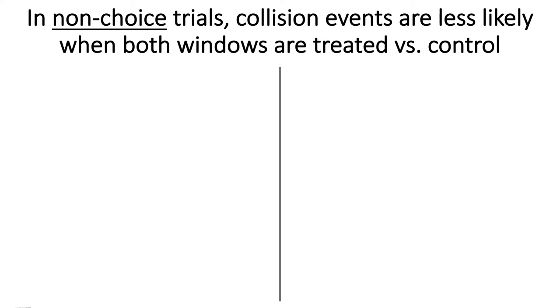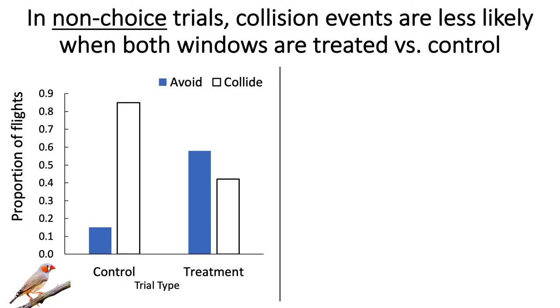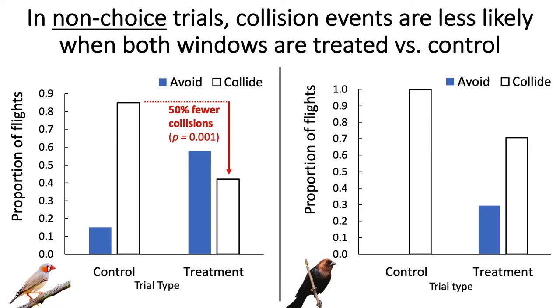Furthermore, in non-choice trials, we found that collision events are less likely to occur when both windows are treated versus when both windows are lined with control film. Zebra finches experienced 50% fewer collisions with both treated windows, and cowbirds experienced 30% fewer collisions.